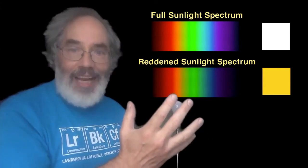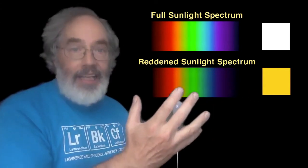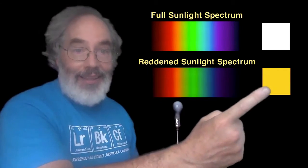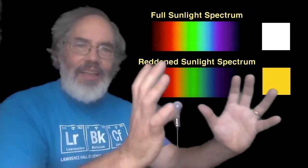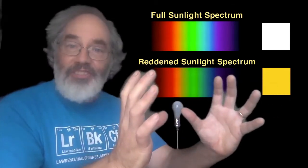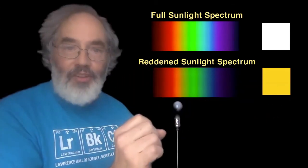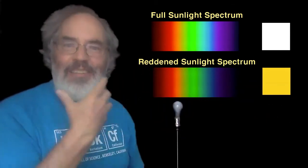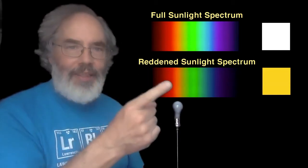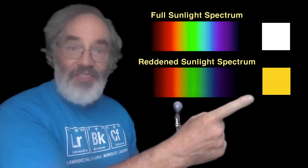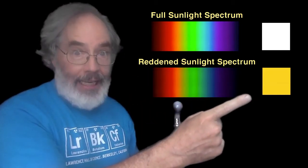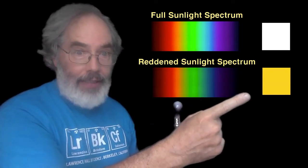Astronomers call this reddening. Even though it made the light yellow, it shifted the light toward the red end of the spectrum — or at least our perception of the light. So that's atmospheric reddening of the light.